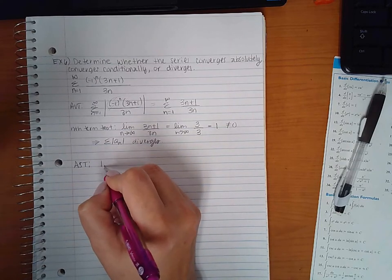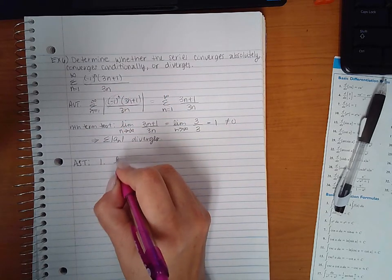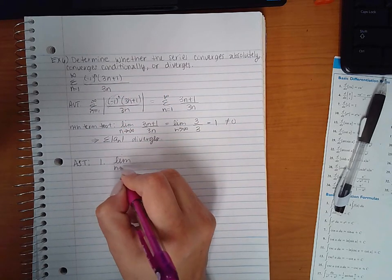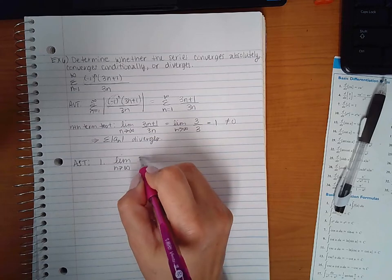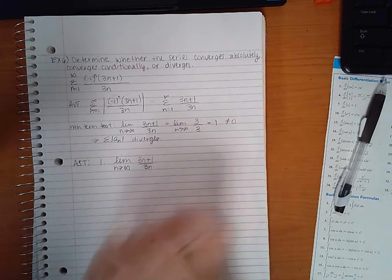So, which means part 1, we're going to take the part without the alternating part and find the limit of that as n approaches infinity. Now, I kind of have already done the work because if you'll notice, this is exactly that, right?